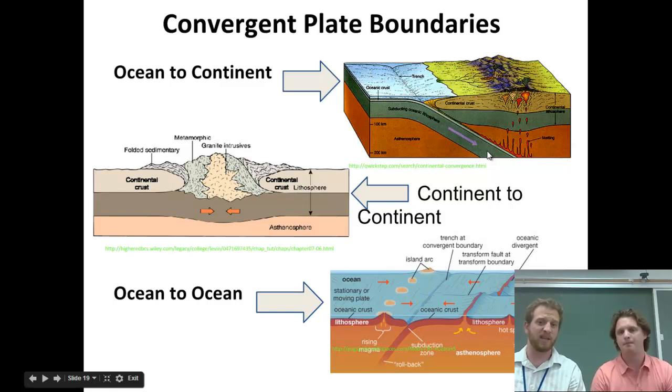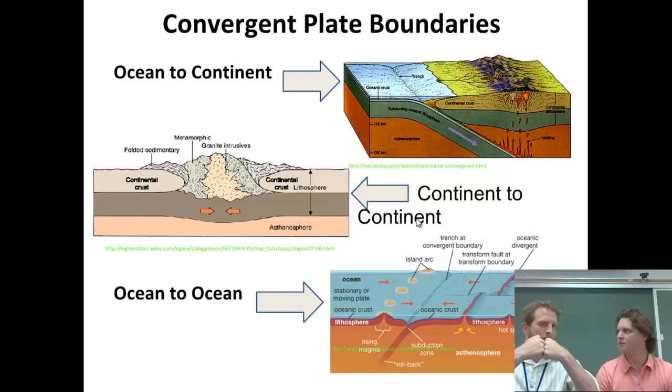For continent to continent, if two continents run into each other, there's oceanic crust underneath. So it can't go down - it's got to go up. One can't go underneath the other, so they come together and form mountain ranges at that boundary.